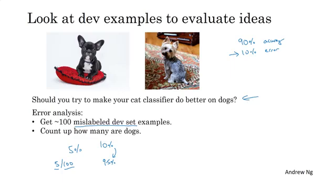And so you might reasonably decide that this is not the best use of your time. Well, maybe it is, but at least this gives you a ceiling or an upper bound on how much you could improve performance by working on the dog problem. And in machine learning, sometimes we call this the ceiling on performance, which just means, what's in the best case, how well could working on the dog problem help you?